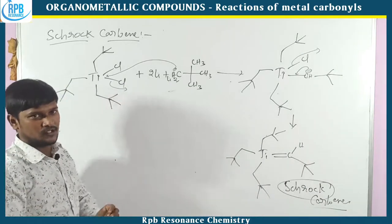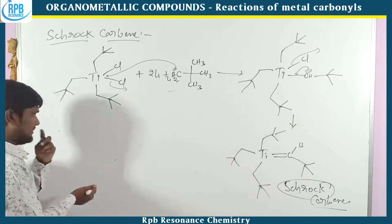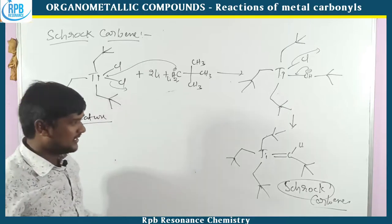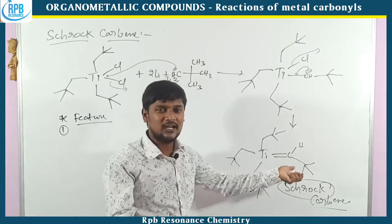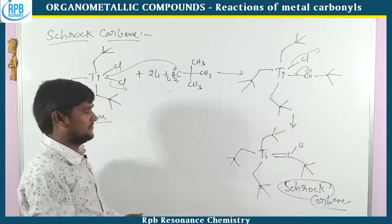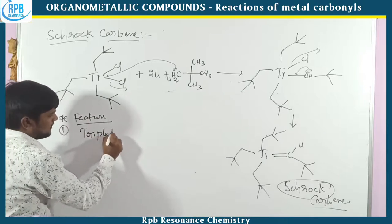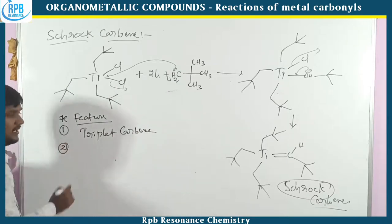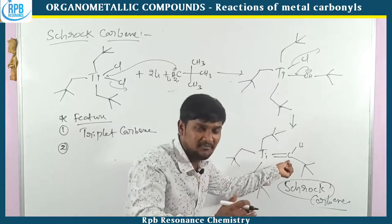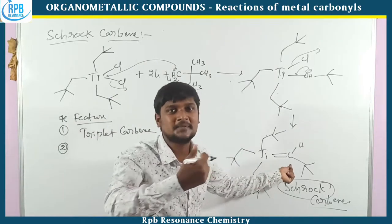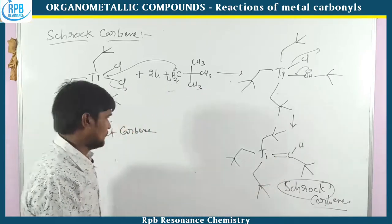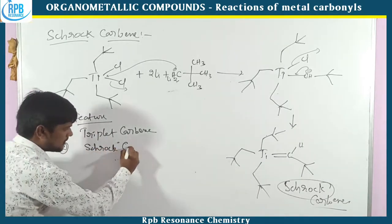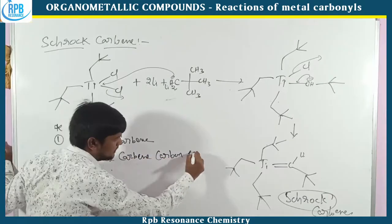Now the features of Schrock carbene: all the groups attached are alkyl groups or hydrogen. In the case of alkyls and hydrogen, that carbene acts as triplet carbene. So Schrock carbene is triplet carbene. Triplet carbene is electronically rich carbon — it cannot accept electrons from the metal atom. So Schrock carbene carbon is electronically rich.